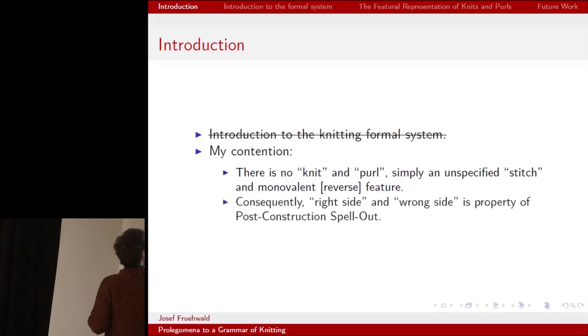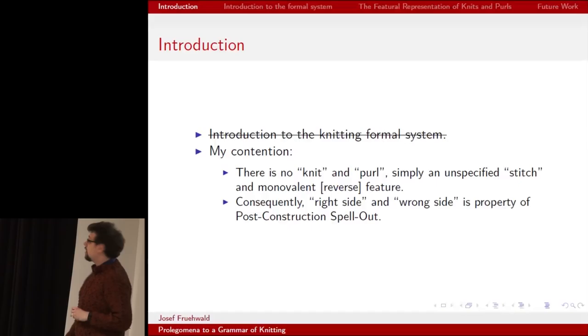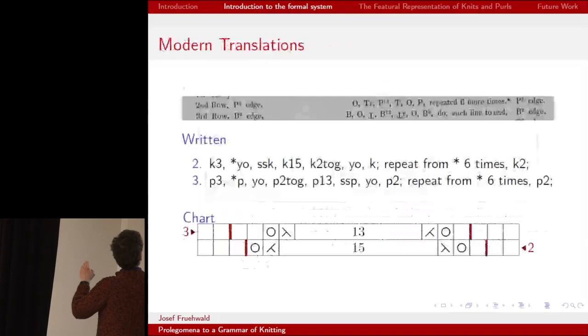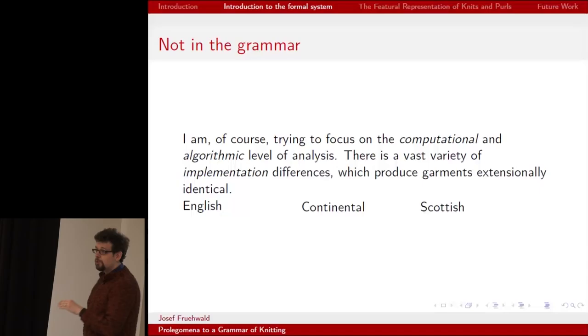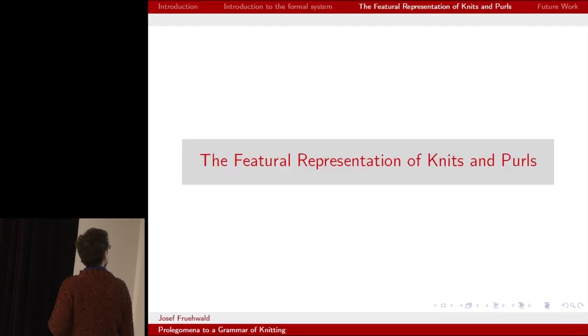Consequently, right side and wrong side, or right side out, inside out, is a property of post-construction spell-out exclusively. So you're skipping over my parsing of the elder knitting grammarians, my poor attempts at formal language theory, and of course no grammar would be incomplete without policing the boundary between competence and performance. Skipping straight to my featural analysis of knits and purls.